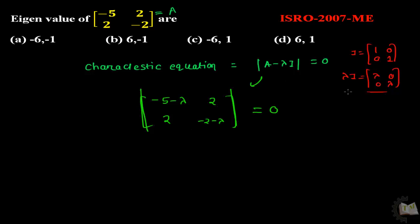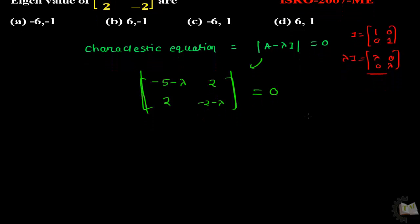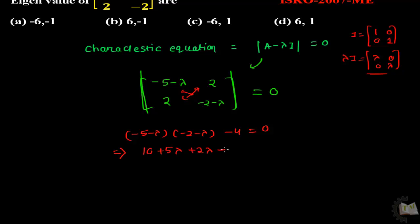Now calculate the determinant of this matrix by cross-multiplying. You will get a quadratic equation. The final equation looks like: lambda squared plus 7 lambda plus 6 equal to 0.